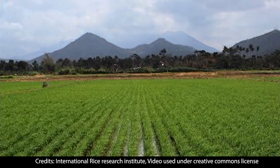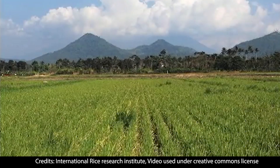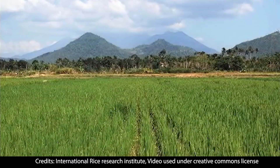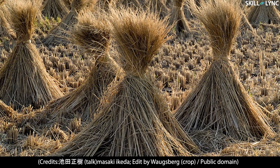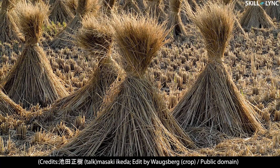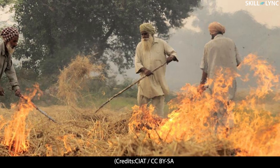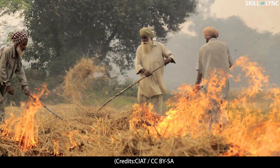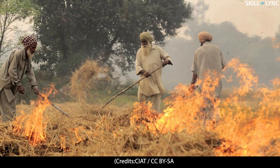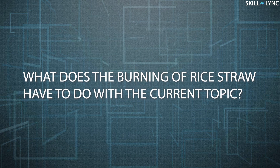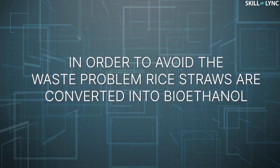Hey guys, welcome back to the channel. Around the world, rice is the major food crop consumed by people, especially in Asia. For every kilogram of rice harvested, 1 to 1.5 kilograms of rice straw is produced. These rice straws are abundant plant dry matter waste materials. Usually the rice straws are simply burnt in the fields to get rid of the waste, but this causes pollution and affects health. In order to avoid the waste problem without affecting the environment, rice straws are converted into bioethanol.